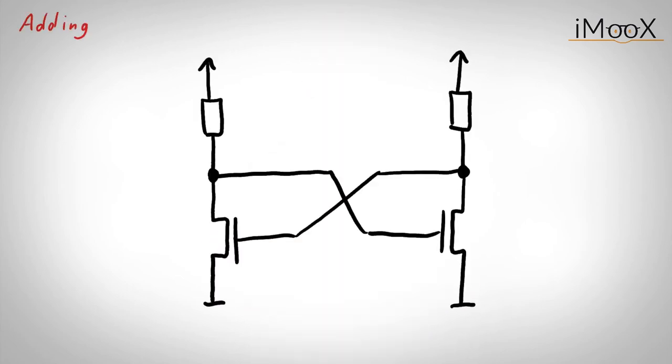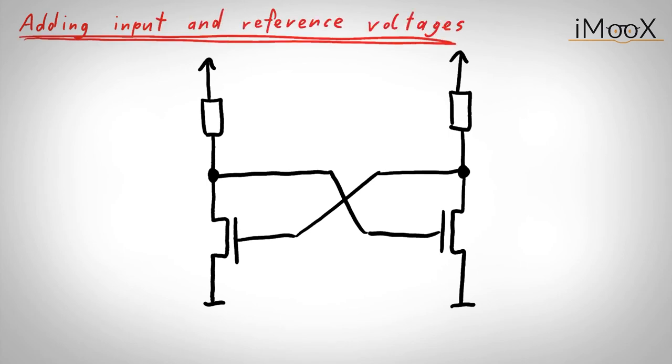The next question we can ask ourselves is, how do we bring the input and reference voltage into this latch? One simple approach would be to replace the two resistors with two transistors and setting the gates to either the input or reference voltage. Now, we have the possibility to create a difference in the two branches and to make the latch flip.